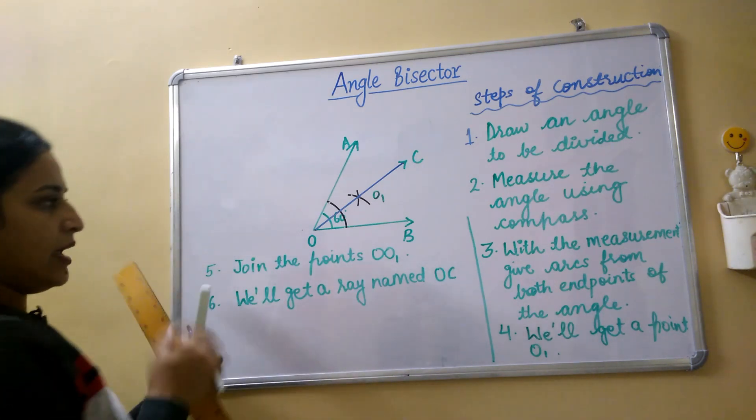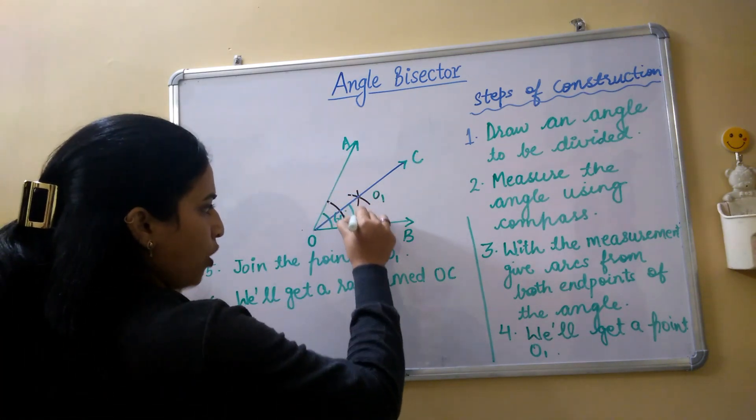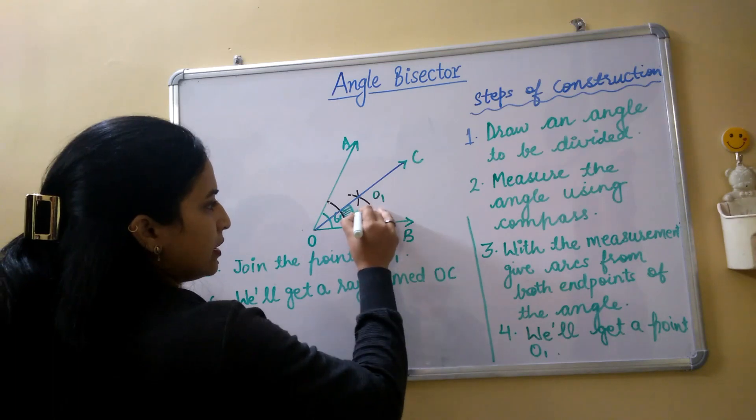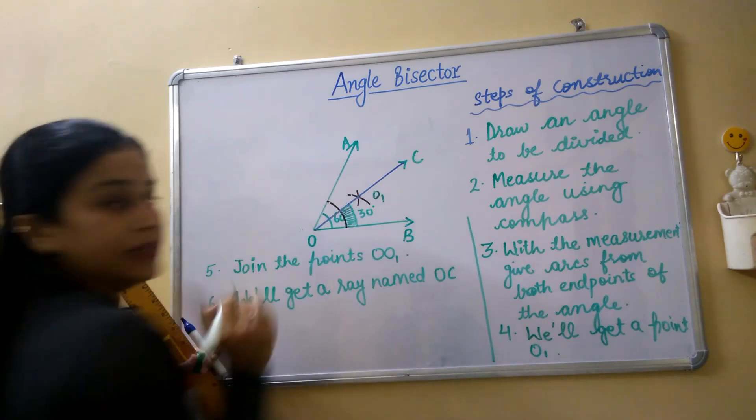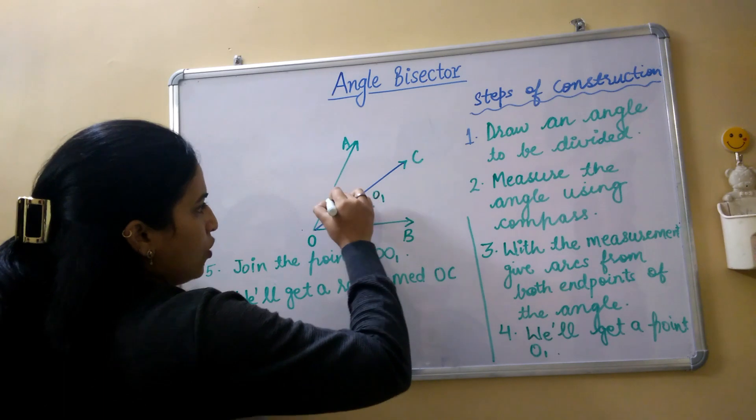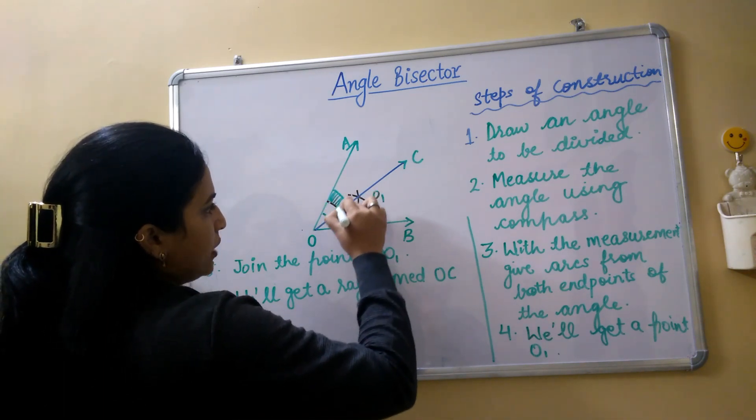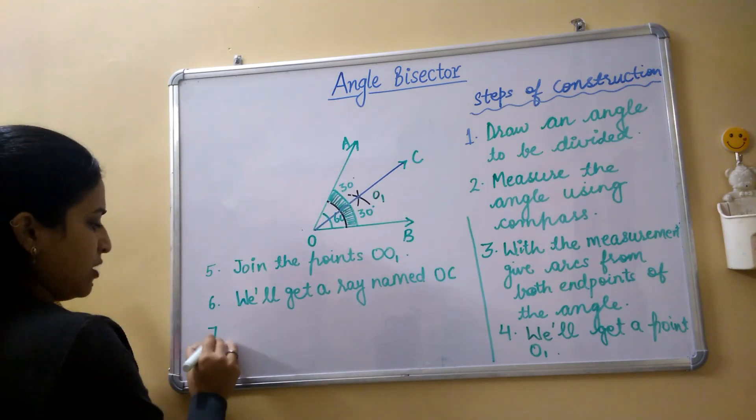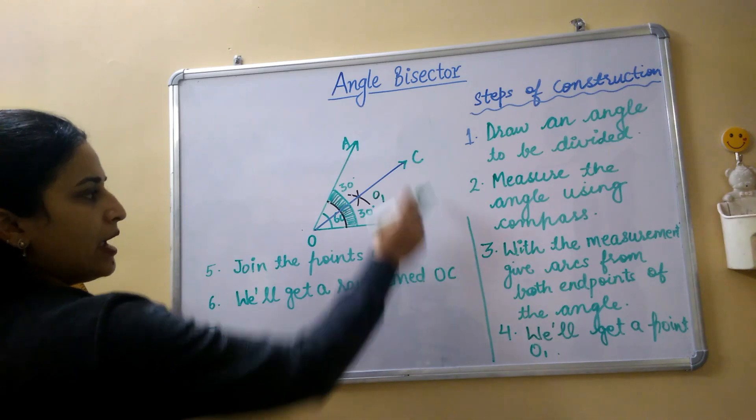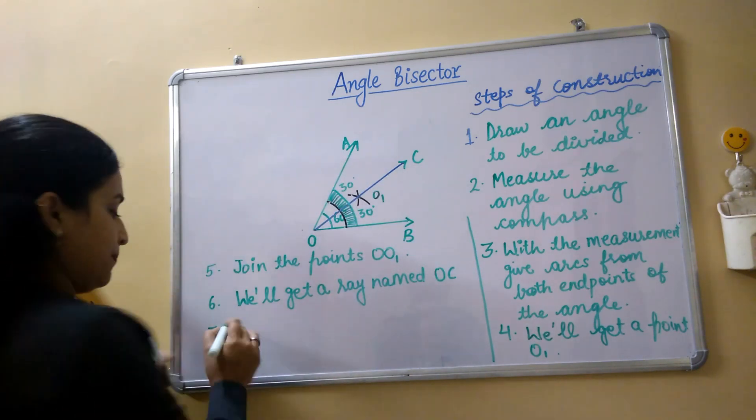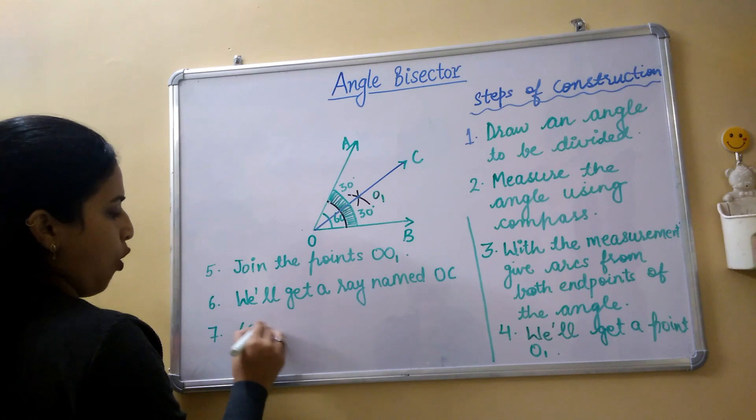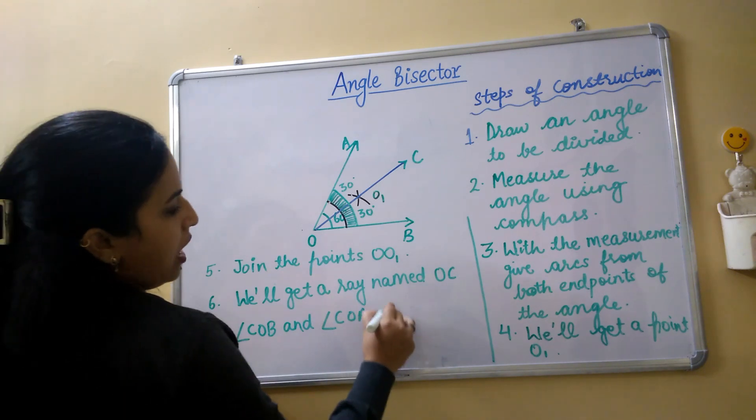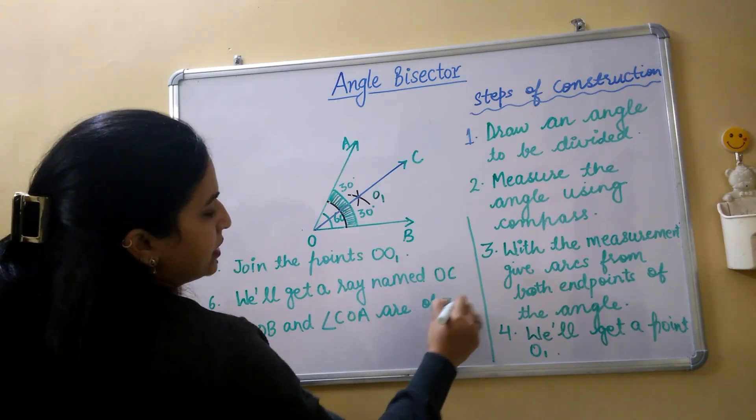So you can see that this angle that we got, this angle is of measurement that is 30 degrees. And this angle will also be of 30 degrees. So we can say 7th point, COB and COA are of 30 degrees.